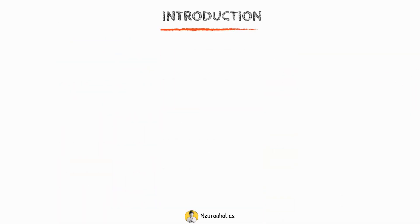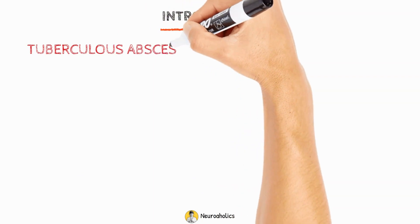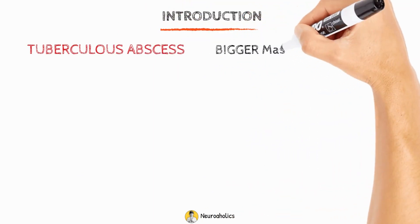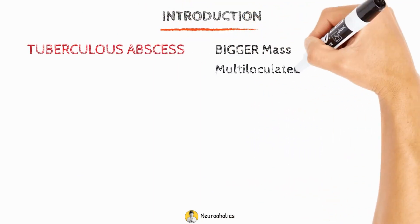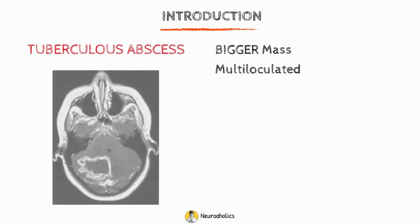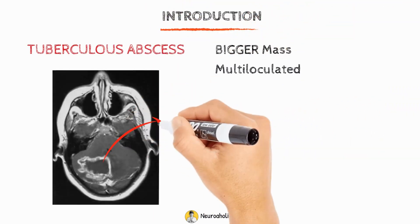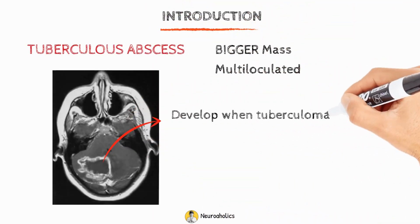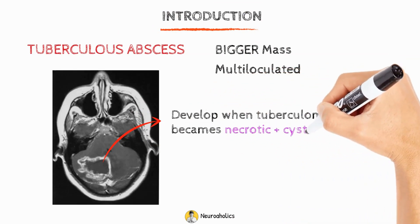In contrast to tuberculomas, tuberculous abscesses are often bigger and multiloculated. They develop when the core of a tuberculoma becomes necrotic and cystic.